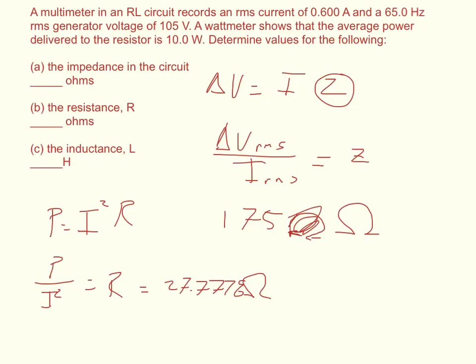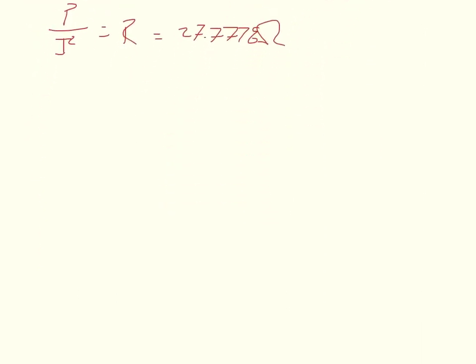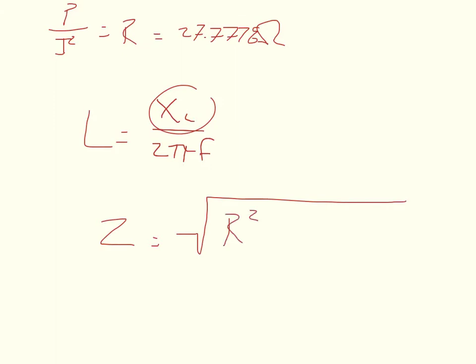And now the last part, it wants to know the inductance. And so we know that the inductance is equal to the inductive reactance divided by 2 times pi times the frequency. And we know that the inductive reactance can be found in the formula for impedance. And since we just solved for R, we have only one unknown in impedance. So this is an RL circuit. So it would be R squared plus XL squared. And it's usually XL minus XC, but there's no capacitance. So XC becomes 0.